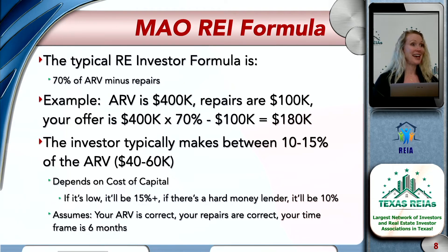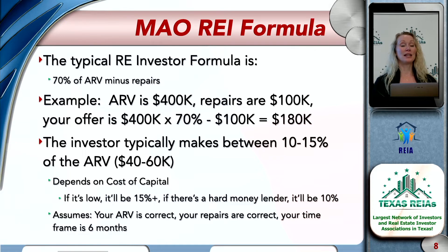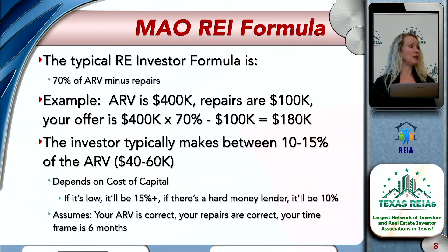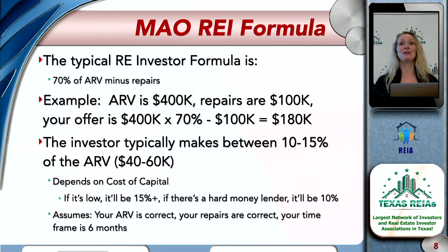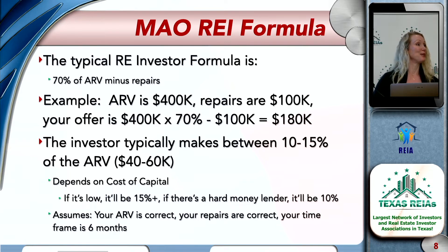We have at least two lenders in the room who want to bring down your cost of capital. If you're investing with a self-directed IRA or your own cash, you'll typically make at least 15% of ARV. If you're working with a hard money lender, they'll take about 5% of ARV from your profit. Don't think of what it costs — think of what it makes you. If it unlocks $40,000 in profit, you should be thrilled to share some of that.